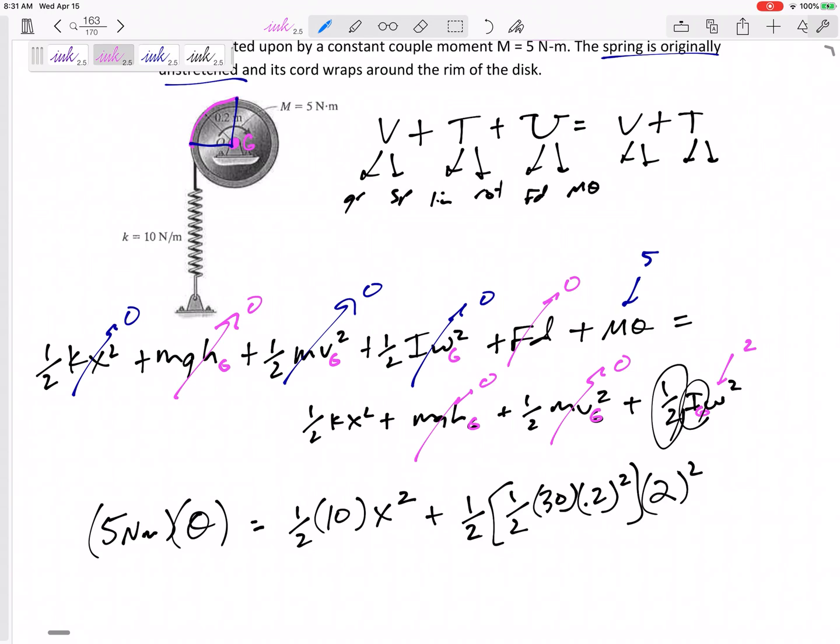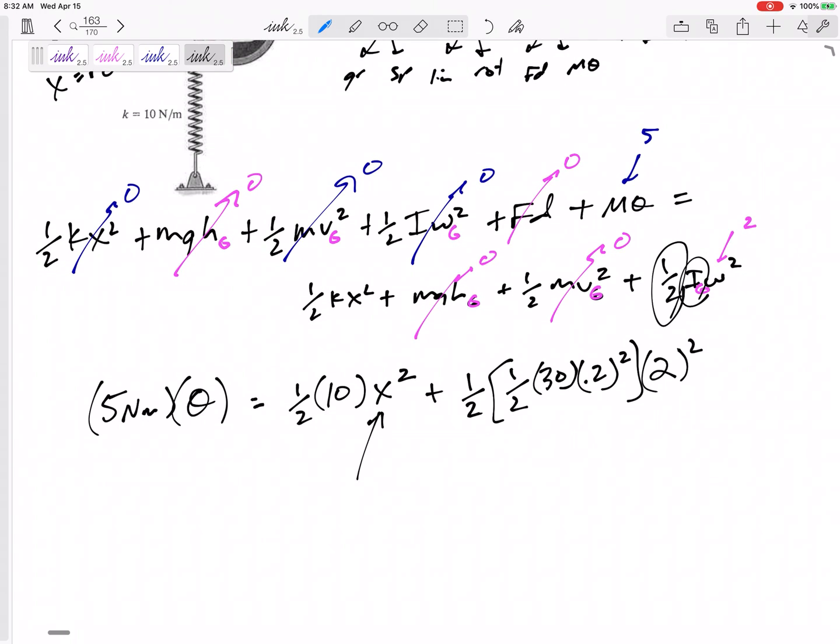Let's visualize this. The spring is getting stretched by being wrapped around the edge of the disc. So, that arc length there would be the stretch of the spring. This would be X. What is theta? Theta is the angle that it rotates. The arc length, S equals R theta. Or in this case, X equals R theta. So, that X is 0.2 theta. Then my only unknown is theta.